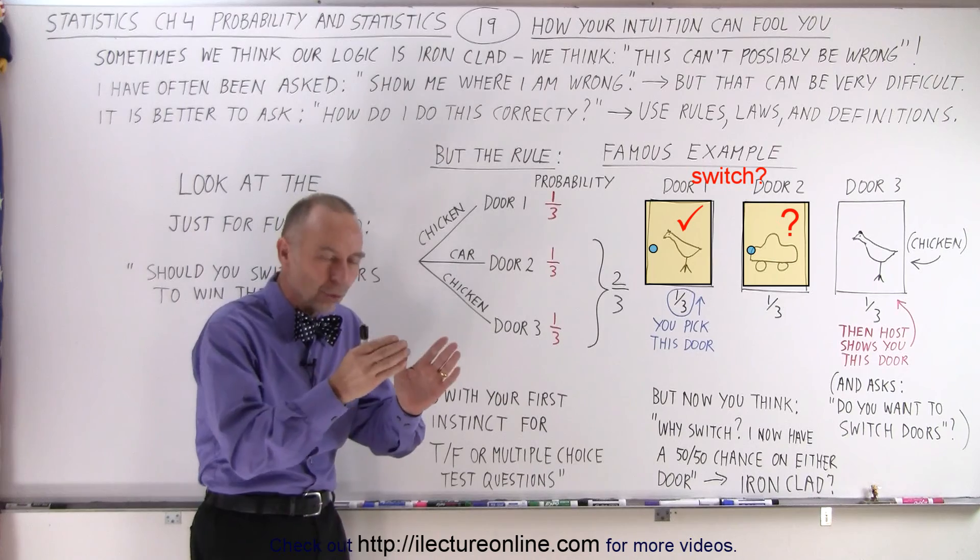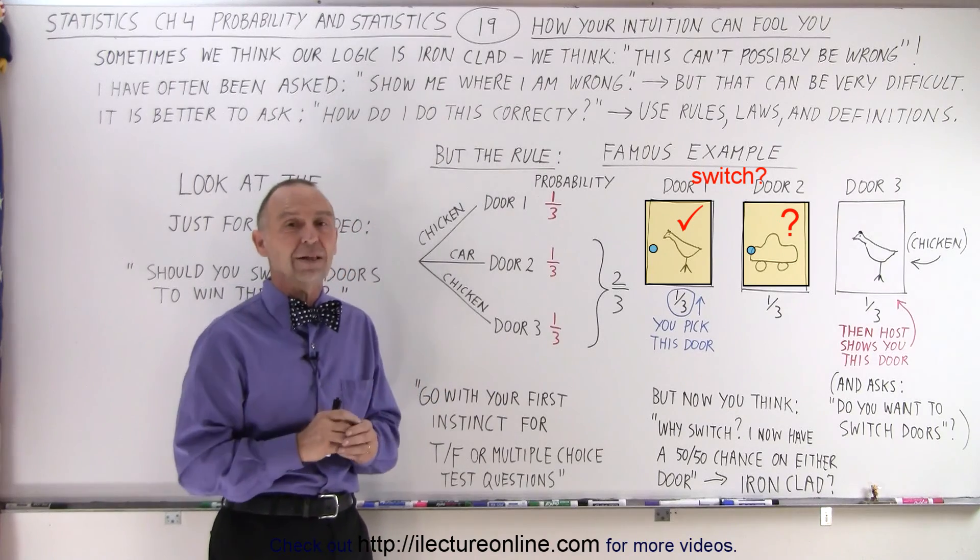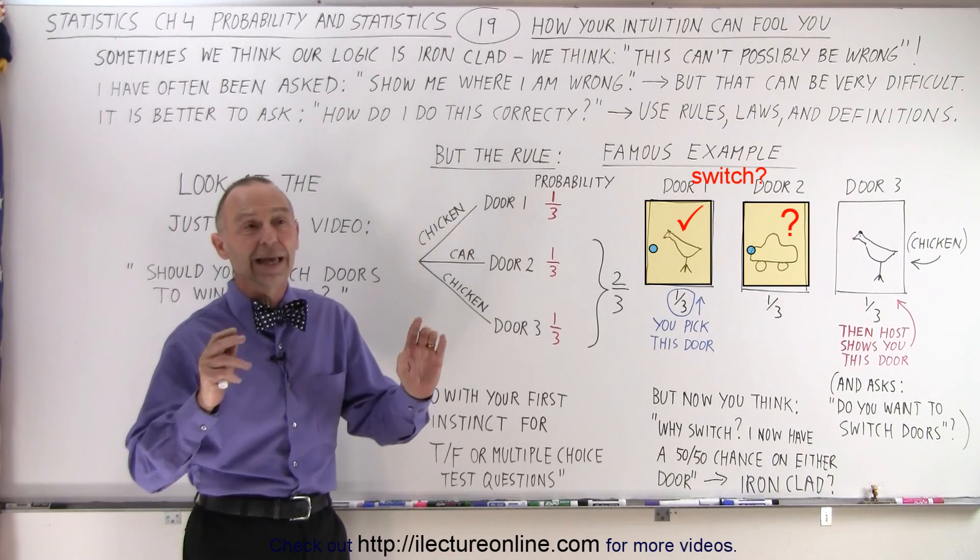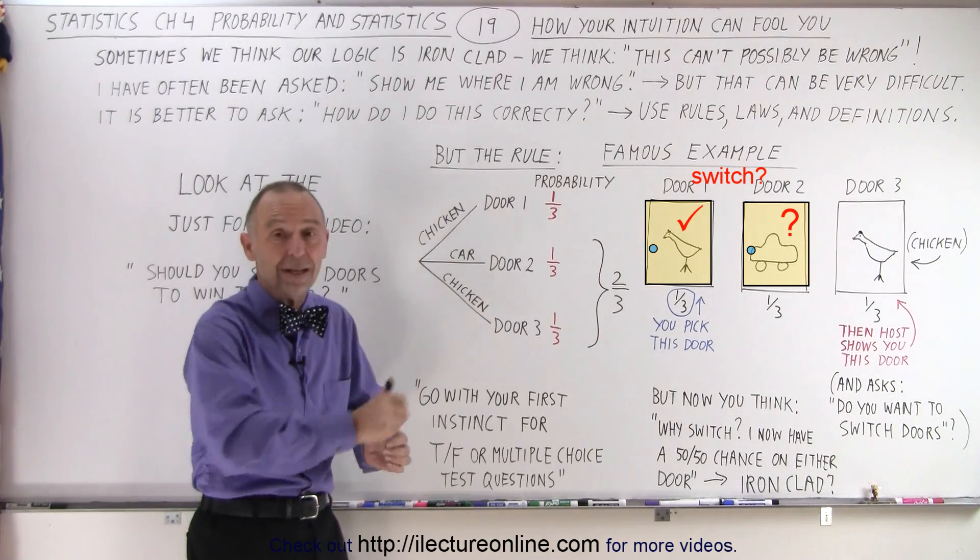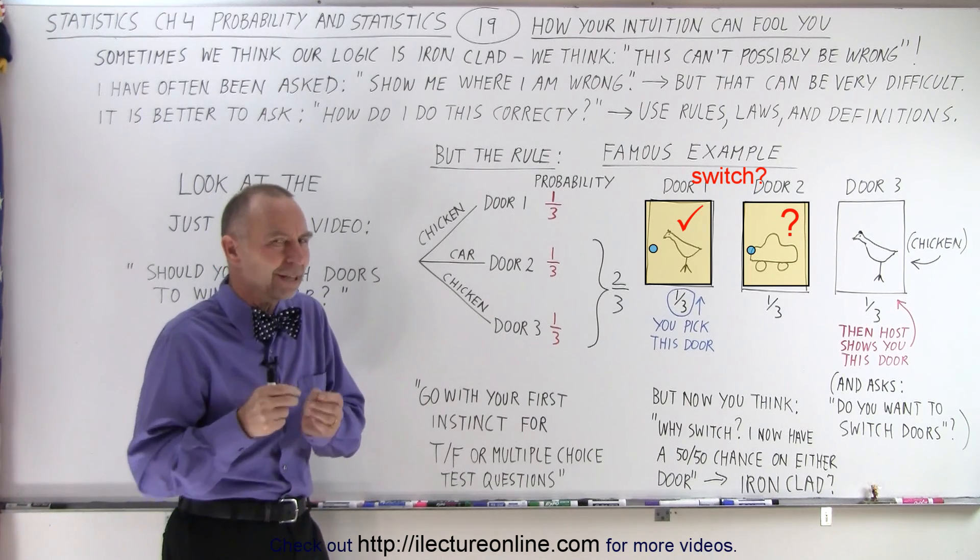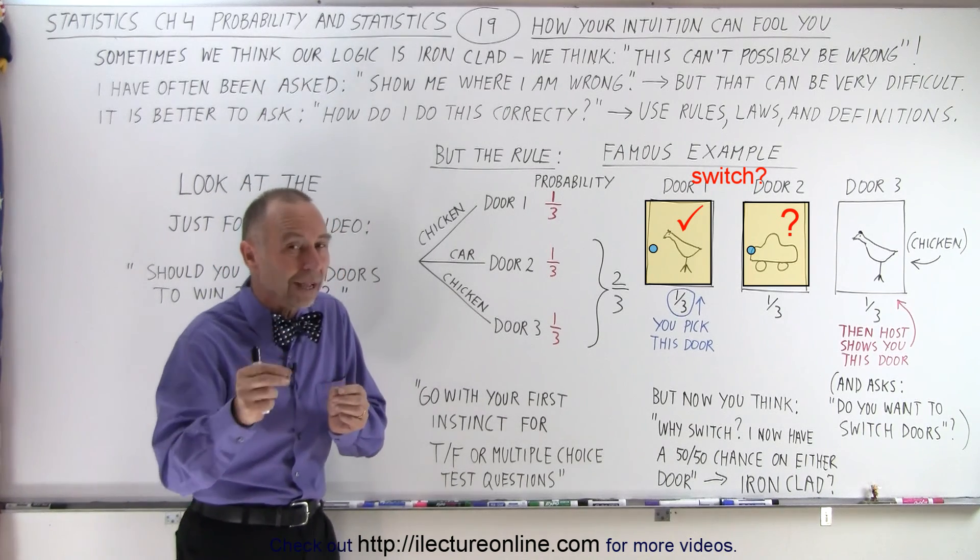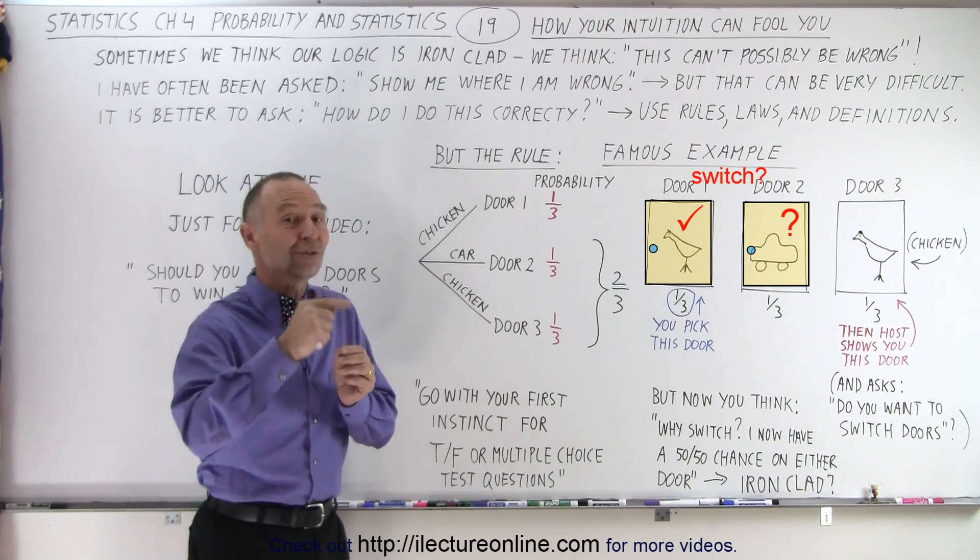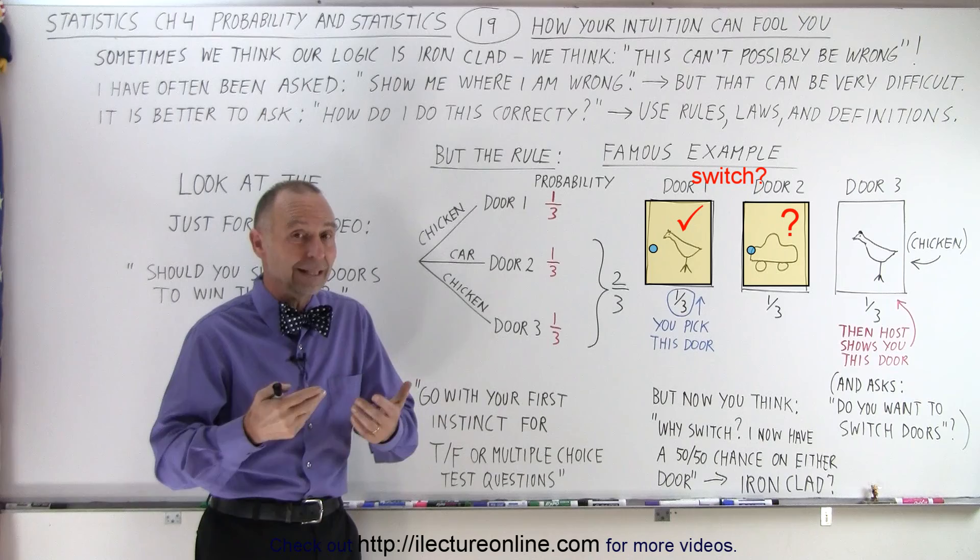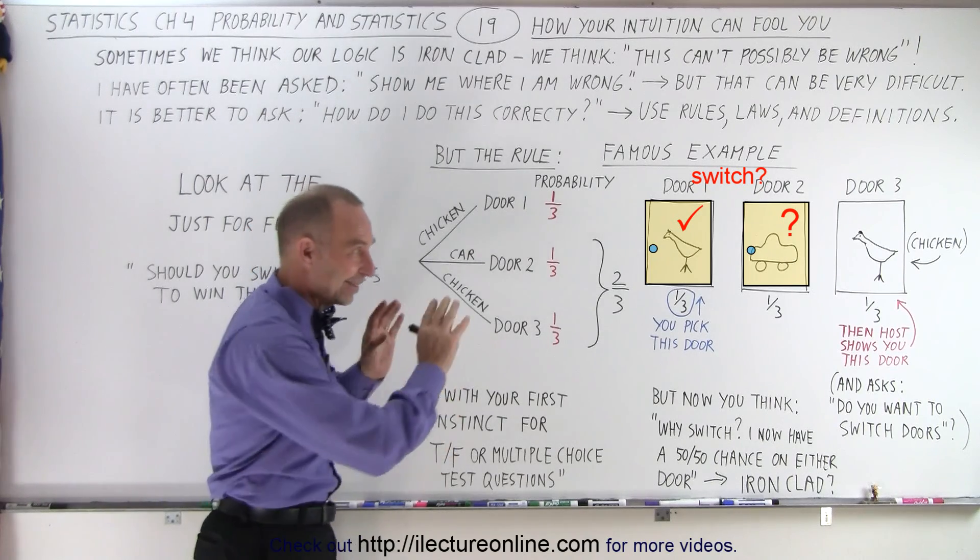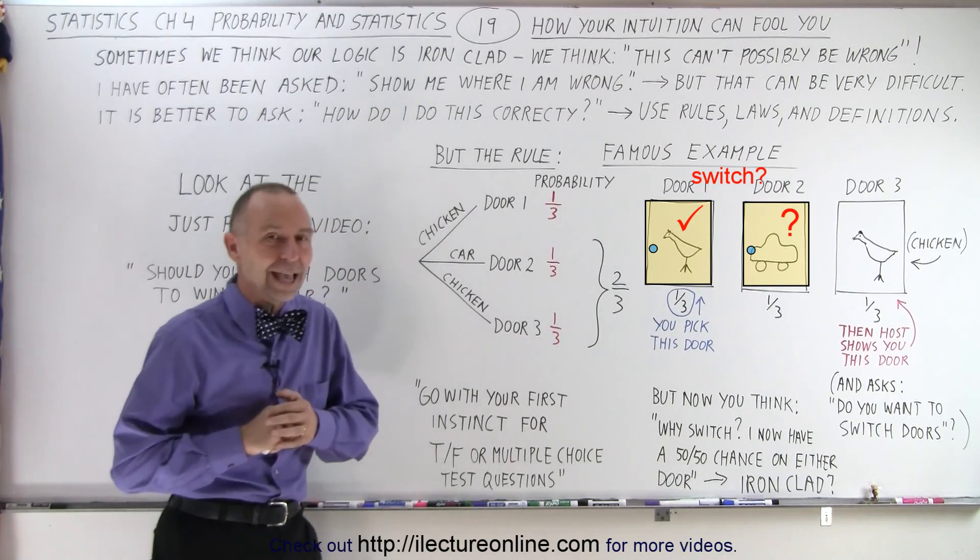But what if you have a multiple choice question and there's three possible answers and you have no idea what the right answer is? Just not a clue and you just by random just pick one of the answers. Then of course you have one third chance you'll be right. But then if I then show you one of the other answers and tell you that is not the answer, should you now switch to the one that you didn't pick and the one that I didn't show? And the answer would be yes. At that point you want to switch. It's exactly the same as this game.